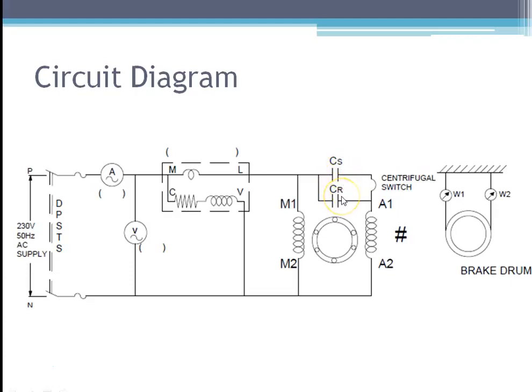Coming to the procedure: make connections as per the circuit diagram and close the switch. The machine starts rotating and is now running at no-load condition. Under no-load, measure the line current, line voltage, wattmeter reading, and speed.